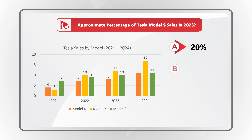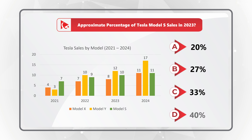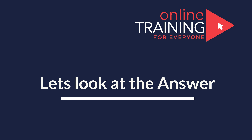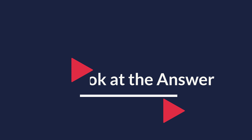The choices are: A — 20%, B — 27%, C — 33%, and D — 40%. Give yourself a little bit of time, maybe pause this video to see if you can come up with the solution. I'm moving forward to share the final answer, and if you have a better way to solve it, please post in comments.